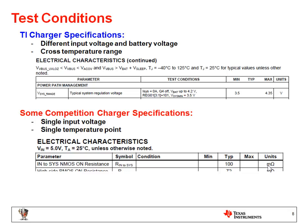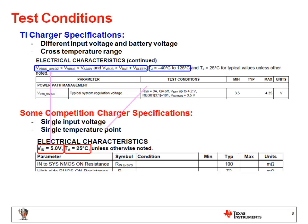Before we dive into the numbers, I would like to draw your attention to the test conditions that apply to all charging parameters here. For TI chargers, the test conditions are with different input voltages and battery voltages, while some competition only specifies data at one single input voltage point. TI chargers are also characterized through the temperature range of minus 40 degrees to 125 degrees, while some competition only tests data at a single temperature point, which is room temperature. It is easy to be tricked if we find a similar accuracy but don't pay attention to the test condition.